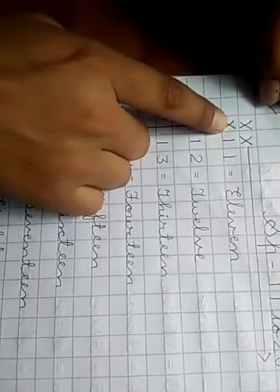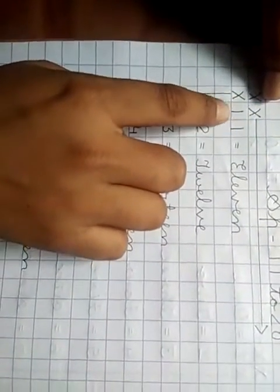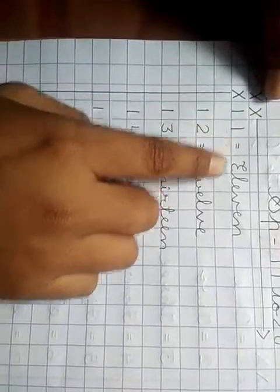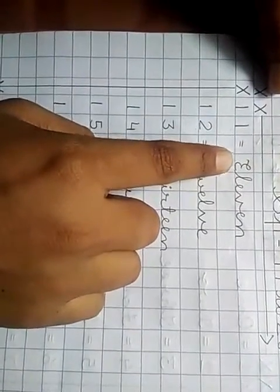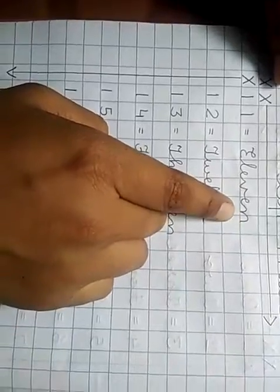First you give date. Three cross you give. Arrow marking you will give. 11 you will write. One box, one number, another box, another number. Okay, equal sign you give. 11 you write. E capital letter. E L E V E N. 11.